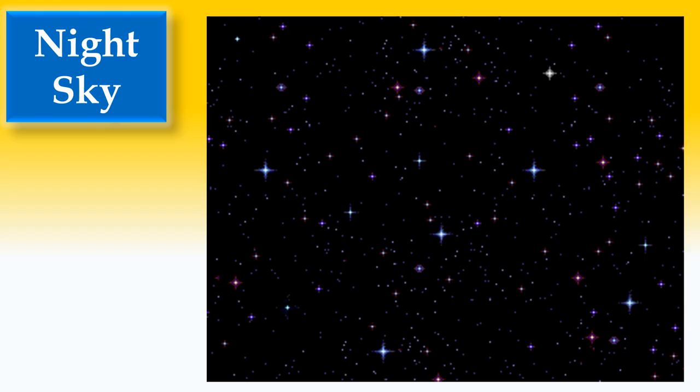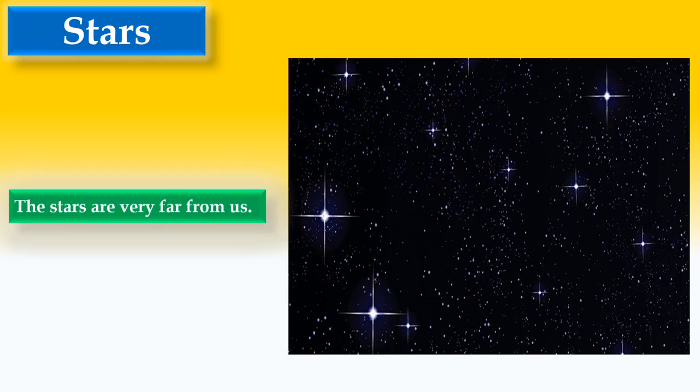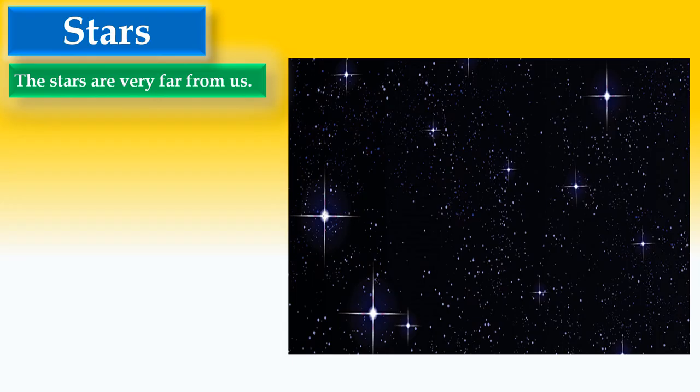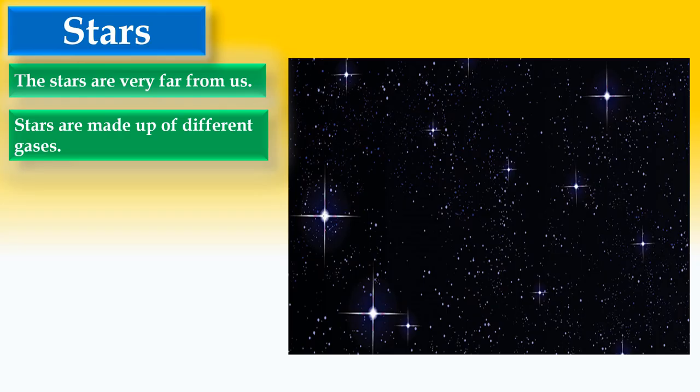about the Sun, stars, and our solar system in detail. So let us see about stars. We can see so many stars in the sky. The stars are very far from us. Each star is made up of different gases, and stars have their own light.